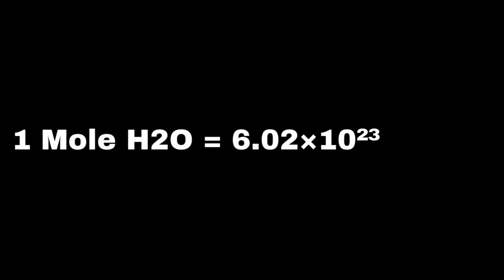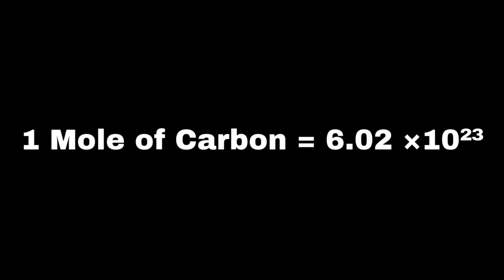But instead of 12, one mole represents a much larger number — 6.02 times 10 to the 23rd — which is called Avogadro's number. For example, one mole of water contains 6.02 × 10²³ water molecules, just like one mole of carbon contains 6.02 × 10²³ carbon atoms.